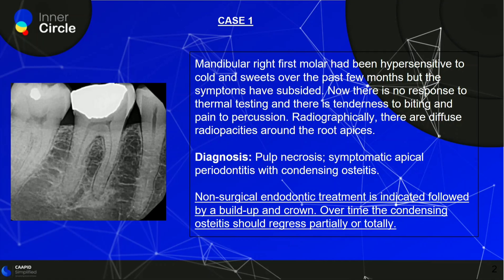In case one, we have a mandibular right first molar which was hypersensitive to cold and sweets over the past few months, but the symptoms have subsided now. There is no response to thermal testing, and there is tenderness to biting and pain to percussion. Radiographically, there are diffuse radiopacities around the root apices.